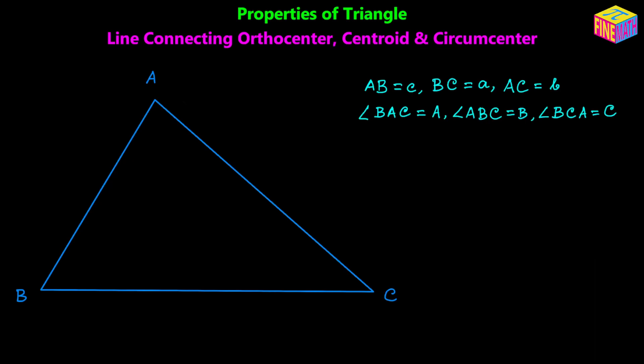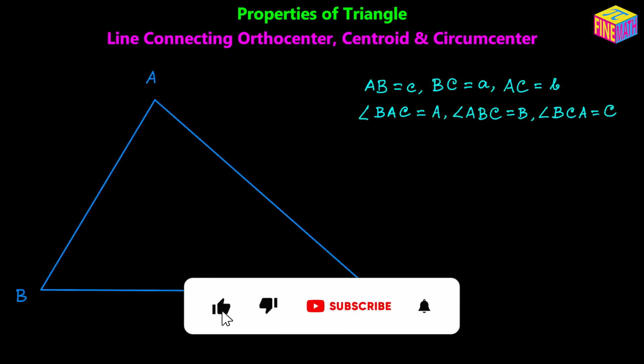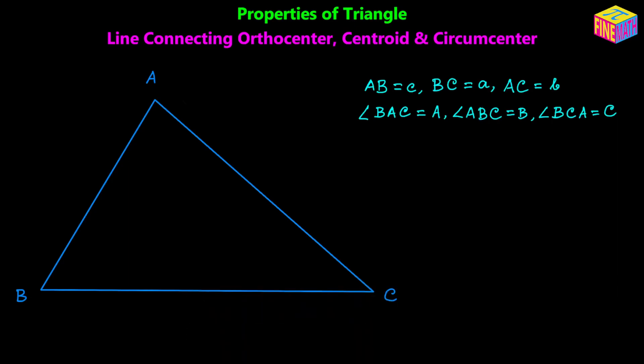Let's suppose we have a triangle ABC where the side length AB is denoted by lowercase c units, side length BC is denoted by lowercase a units, and side length AC is denoted by lowercase b units. Similarly, angle BAC is denoted by uppercase A radians, angle ABC is denoted by uppercase B radians, and angle BCA is denoted by uppercase C radians.